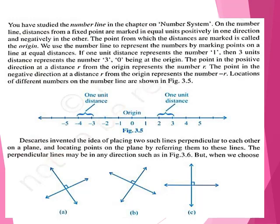Locations of different numbers on the number line are shown in the figure. The origin is there, and from both the left and right sides of zero, numbers are placed. The distance between two consecutive numbers is one unit, whether in the left direction or the right direction.